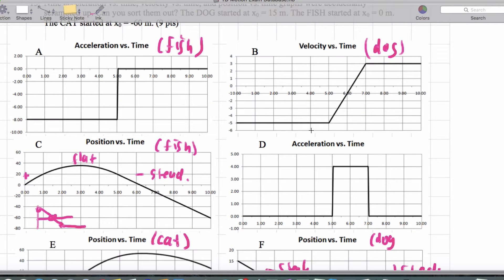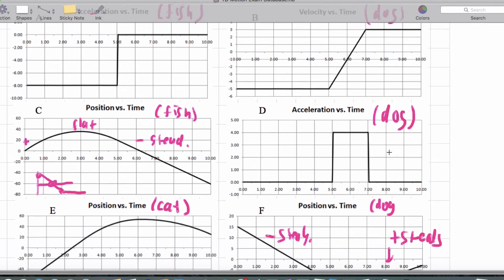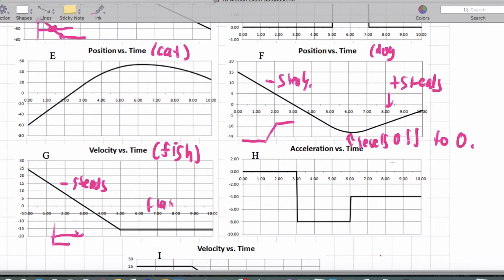What that means for acceleration is we're going to have zero, positive, and zero. So this is also the dog's acceleration. Now what this also means is that this is going to be the cat because it's all we have left.